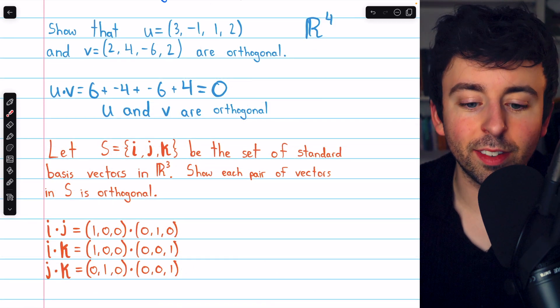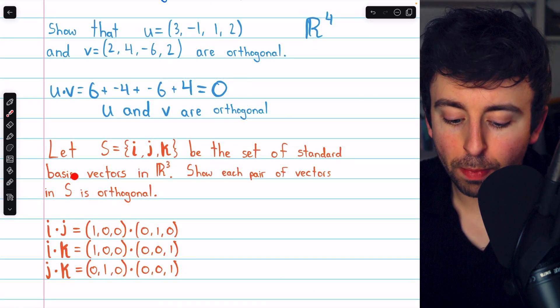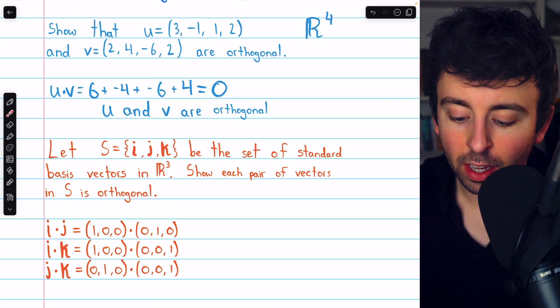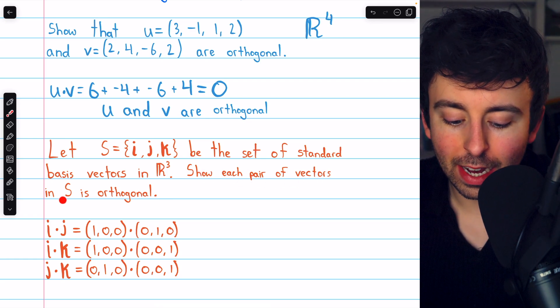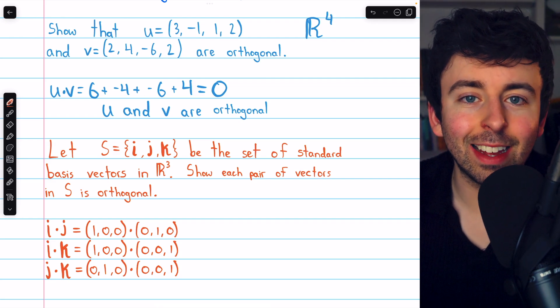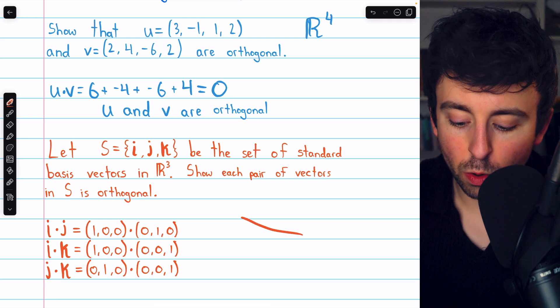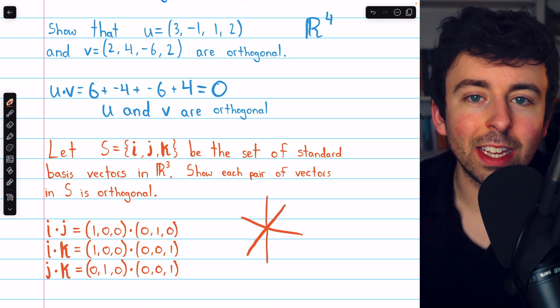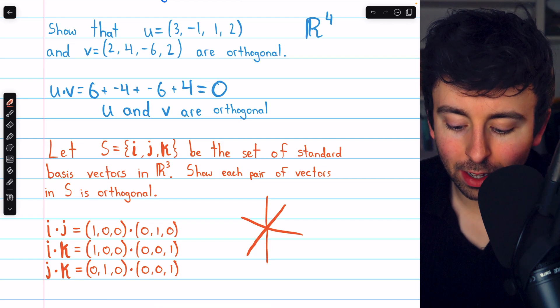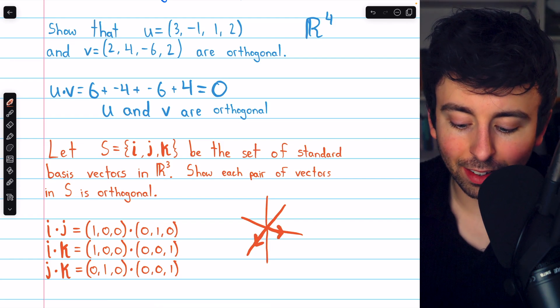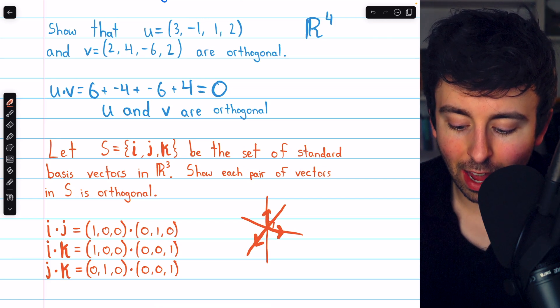Here's one more quick example. Let S be the set of standard basis vectors in R cubed, so i, j, and k. Show that each pair of vectors in S is orthogonal. We understand this, right? When we sketch a three-dimensional coordinate system, we're trying to picture the axes as being mutually orthogonal. i goes along the x-axis, j goes along the y-axis, and k goes along the z-axis. They are all perpendicular to each other.